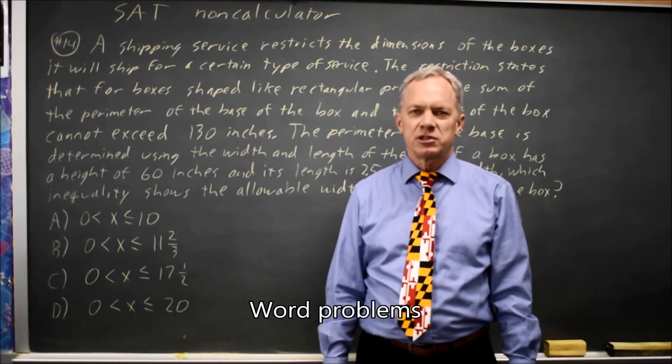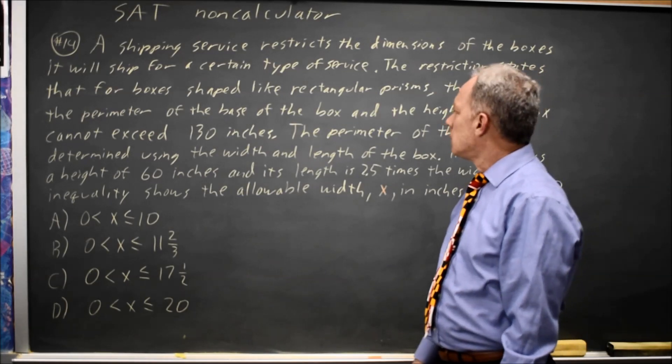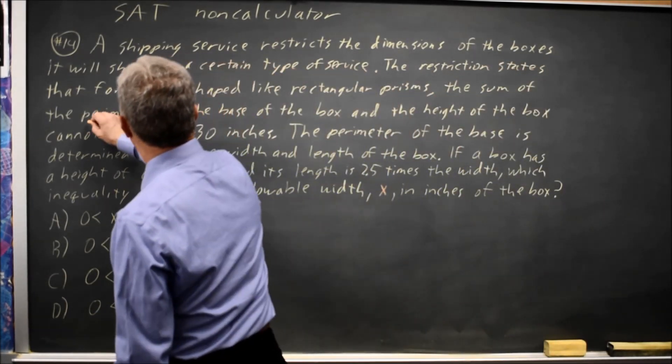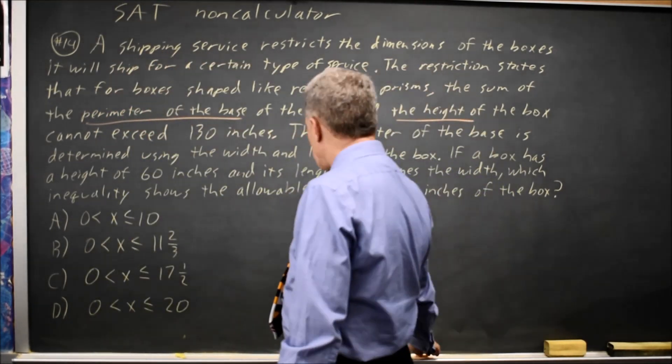This is non-calculator question number 14. College Board describes the restrictions on shipping a box where the sum of the perimeter of the base and the height must not exceed 130.